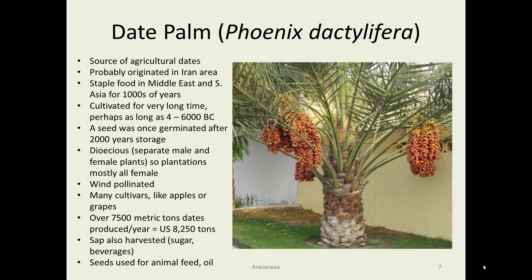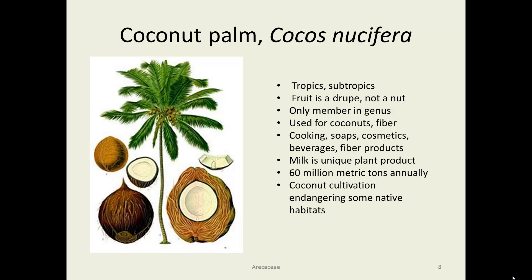Date palms are dioecious, meaning the male and female flowers are on separate plants. When a plantation is established, it is all female plants since the males produce no fruit. Just a few males are kept to accomplish pollination, or in some cases flowers are even hand-pollinated using fertile male flowers harvested elsewhere; otherwise they are wind-pollinated. They are not only used for their fruits — the sap is sometimes harvested and dried down for a sugar-like product or consumed as a beverage. Once de-pitted, the date seeds are used as animal feed and sometimes even pressed for oil.